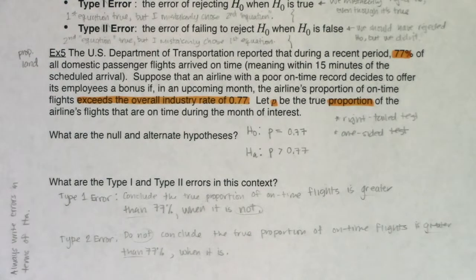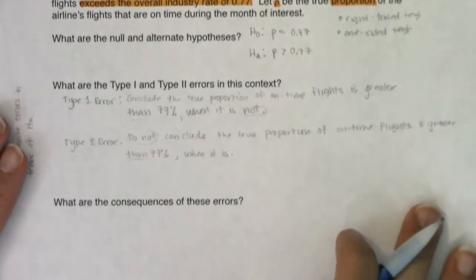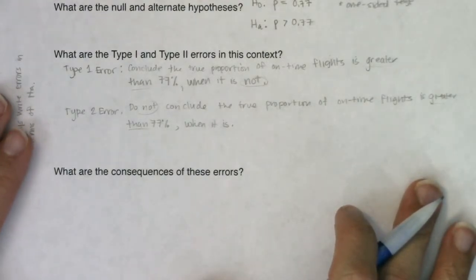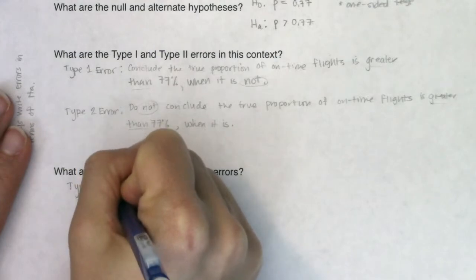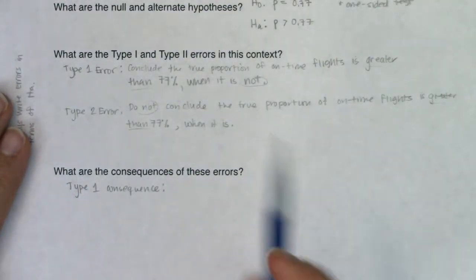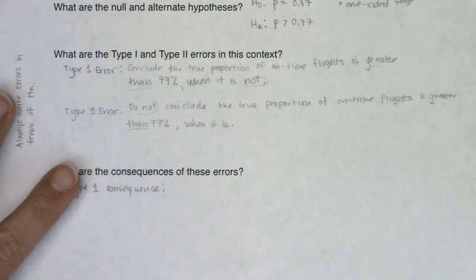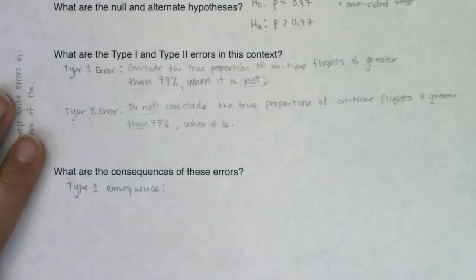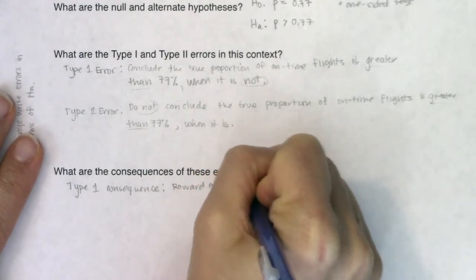That's what I'll be looking for in your error write-ups — always in terms of the alternate. Now let's think about the consequences. For the Type 1 consequence: if I conclude the true proportion of on-time flights is greater than 77%, what happens to the employees? They're going to get their bonus. Did they earn it? No. So I reward employees with an undeserved bonus.